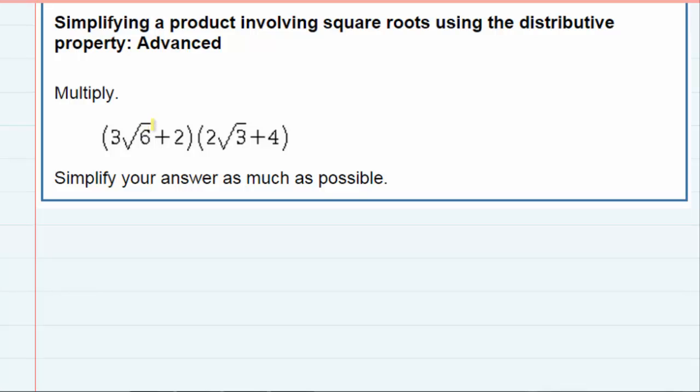I'm going to start by distributing the first part, the three square roots of six, and multiply it by the two square roots of three.